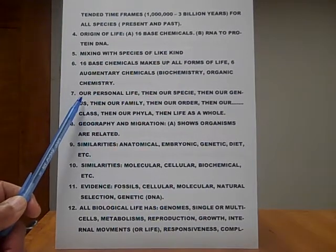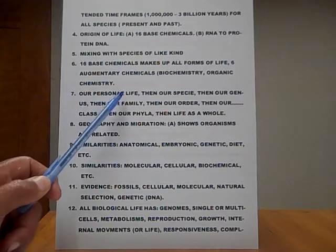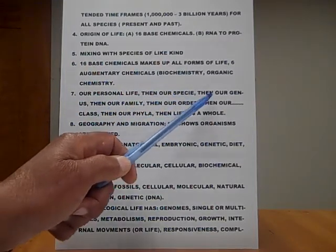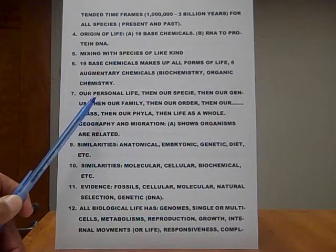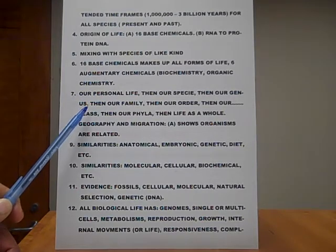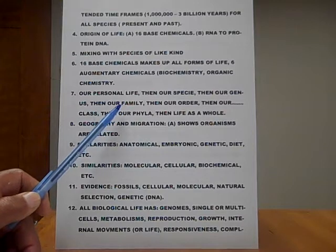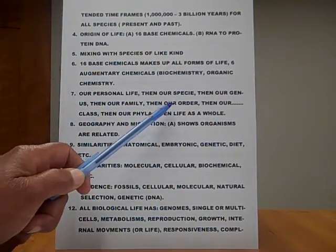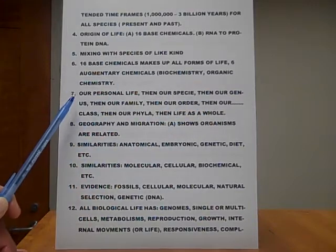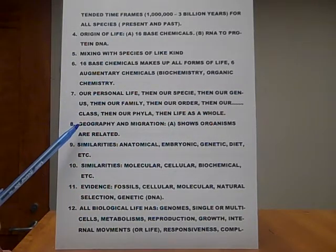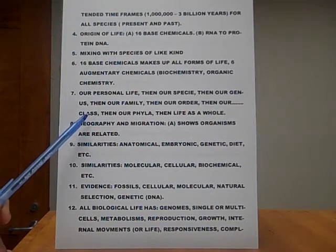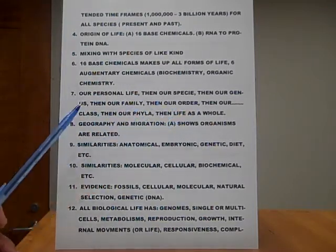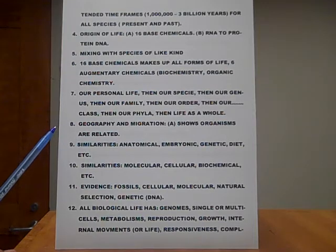Number seven: our life happens from our personal life, then our species, then our genus of which our species belongs to — of like kinds — then our family of like kinds of genuses, then our order of like kinds of families, then our class of like kinds of orders, then our phyla, then life itself as a whole, all over the world, all over the earth, and so forth and so on.